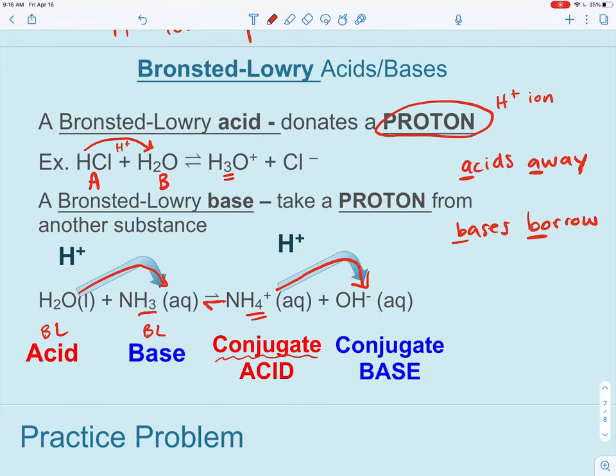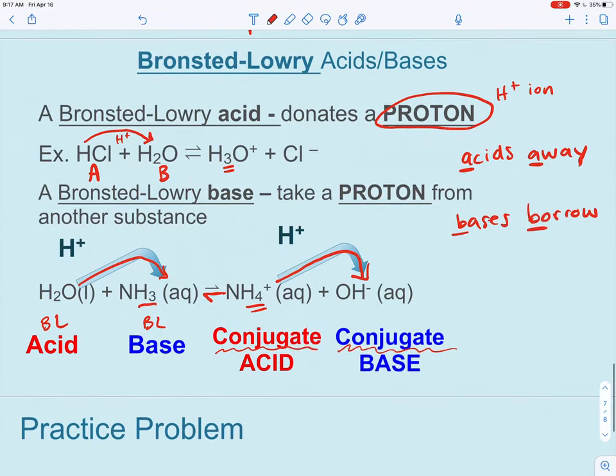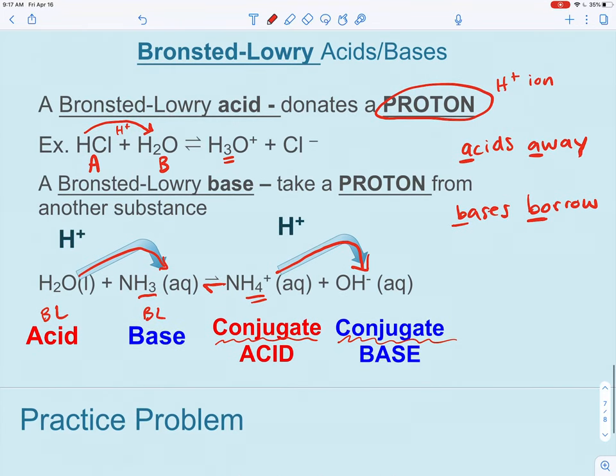The chemical that's receiving that hydrogen on the right side is called the conjugate base. So we've got our Bronsted-Lowry acid and base and then on the right side, the product side, we'll have our conjugate acid and our conjugate base. But the idea is the same. Acids give away protons and bases borrow.